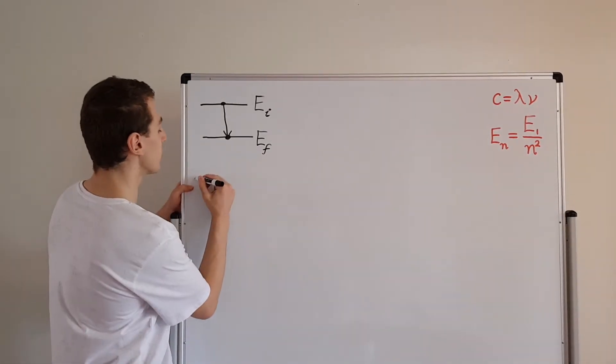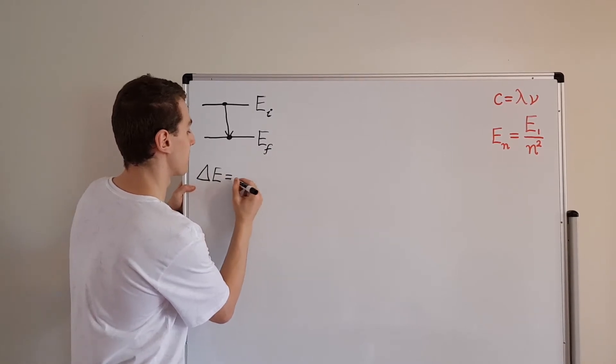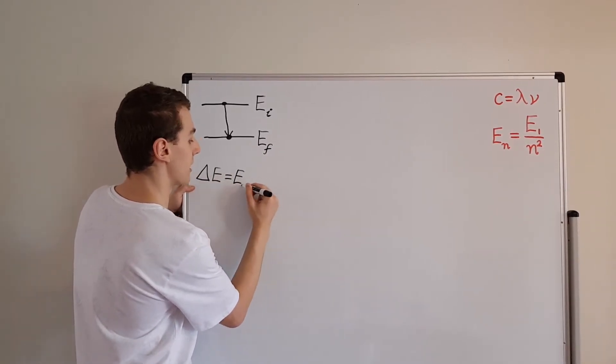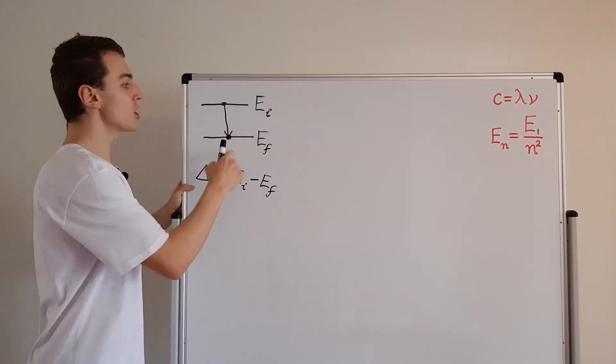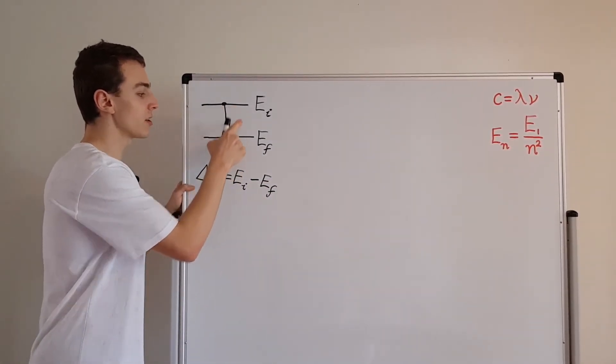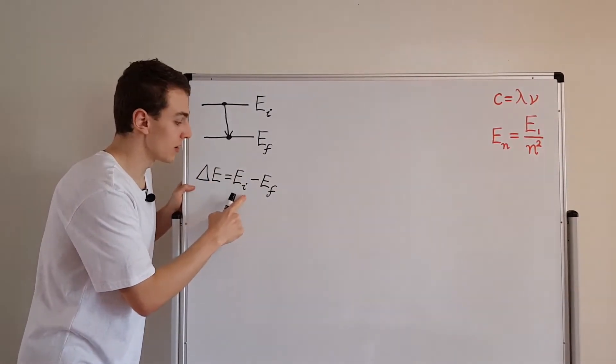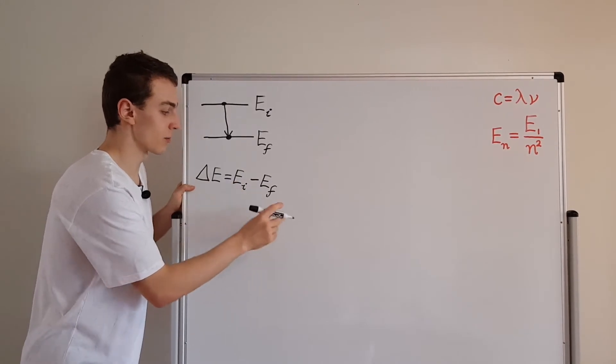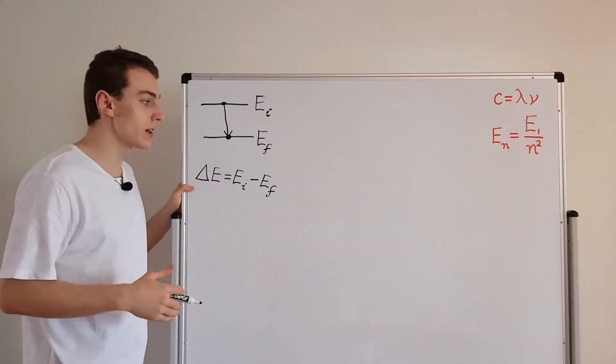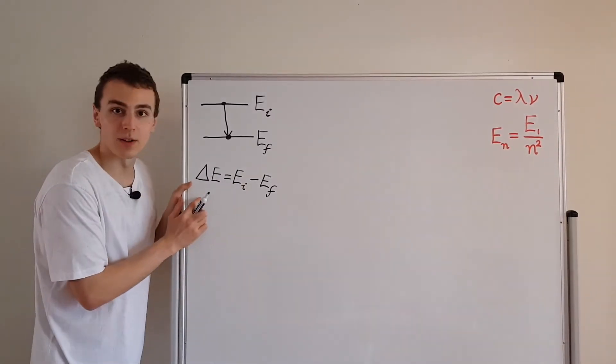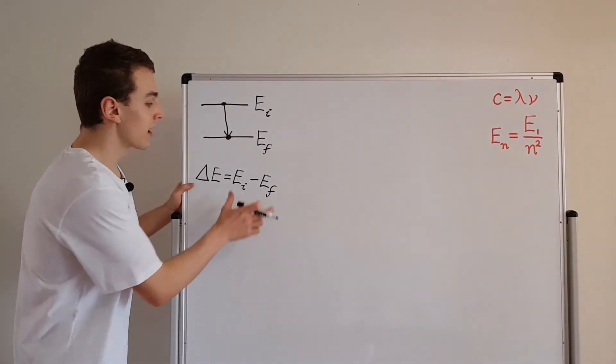So if we have a look at the delta E, the delta E is actually the change in energy. And that's the initial energy minus the final energy. In this case, because we're dealing with emission, the electron is starting at a higher state, finishing at a lower state. EI is actually going to come first. So this guy is bigger, and that's why we're subtracting. This is going to give us a positive number. If we had the reverse process and absorption was occurring, then this would actually be a negative number. So we'd have a negative change in energy. So it's all about convention.